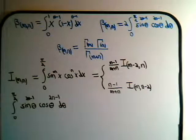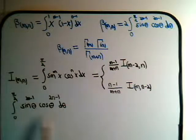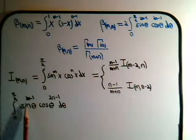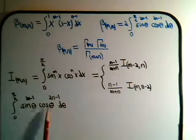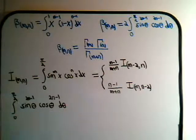What we want to do is use the reduction formula and apply it to this integral: the integral from 0 to pi over 2 of sine of theta to the power (2m minus 1) times cosine of theta to the power (2n minus 1) d theta.